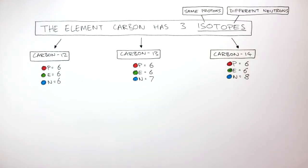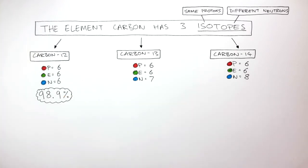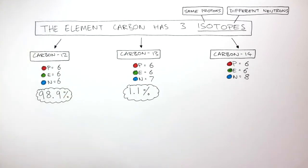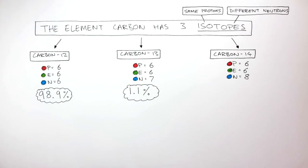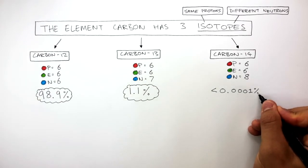So, if we had a sample of carbon, there would be 98.9% carbon-12, 1.1% carbon-13, and then less than 0.0001% carbon-14. Now, the problem is, we can't have all 3 isotopes in the periodic table. So, we need to calculate the average mass of all 3 isotopes.